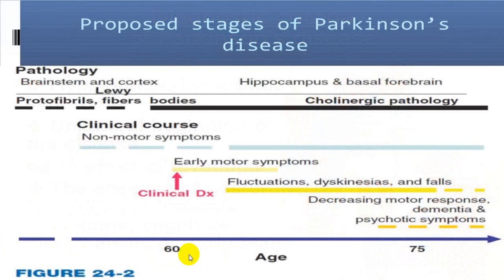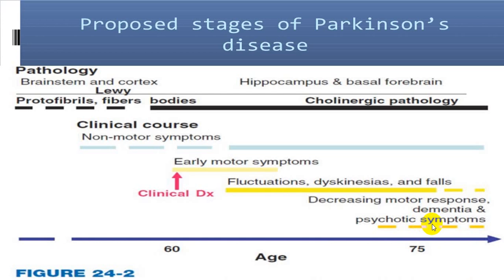Over a period of time, as the disease progresses, non-motor symptoms become more prominent, and fluctuations, dyskinesia, and falls become more frequent. Dementia and psychological disturbances increase, and the person slowly deteriorates.